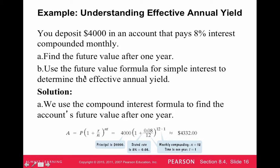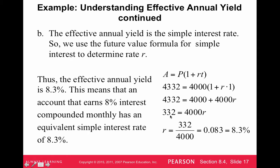When figuring out the effective annual yield: find your future value after one year, figure out the interest — which is just $332 — divide by the original amount, convert that to a percent, and that's the effective annual yield. So the account paying 8% compounded monthly has an effective annual yield of 8.3%.